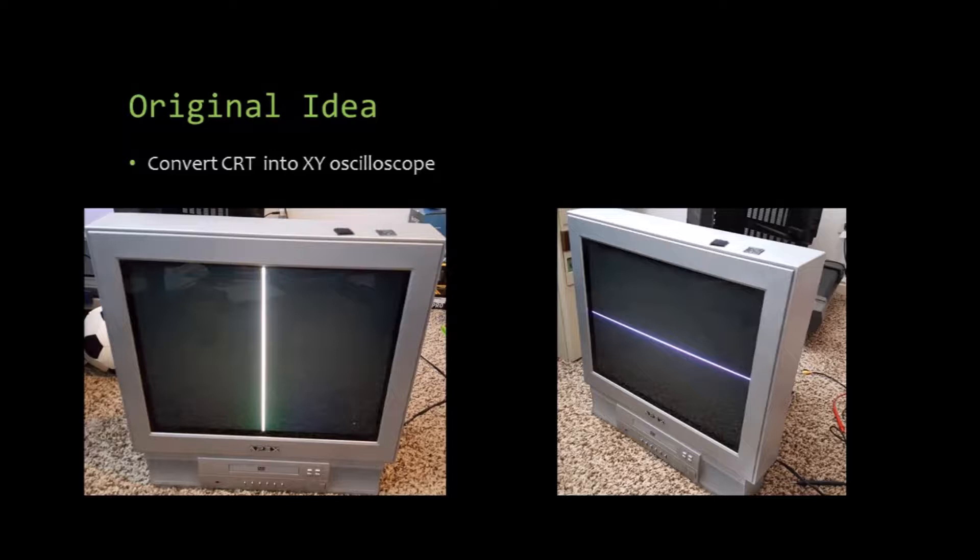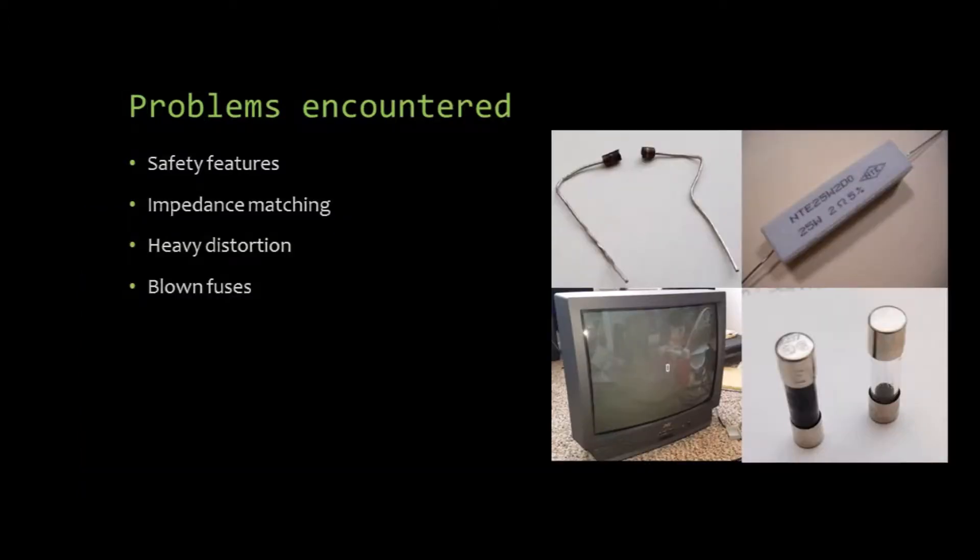Unfortunately, I ran into several problems. One of the problems I encountered was the safety features. The TV was able to detect that its deflection coils had been disconnected and would not turn on. This is to prevent the electron beam from burning a hole in the phosphor on the screen. I measured the resistance of the coils and placed a resistor across it. The resistor immediately burned in half because of the high voltages. I tried again using a higher rated resistor, but that didn't work either.